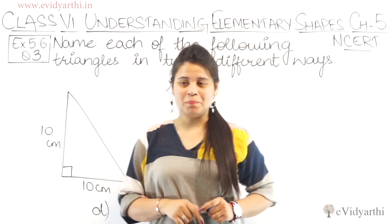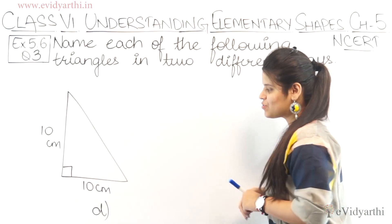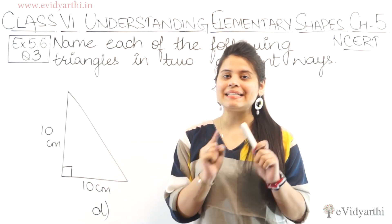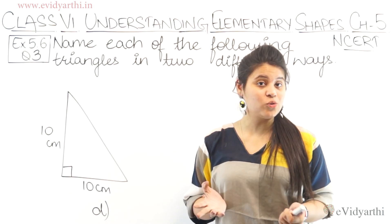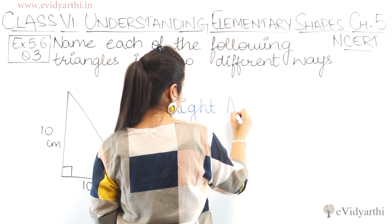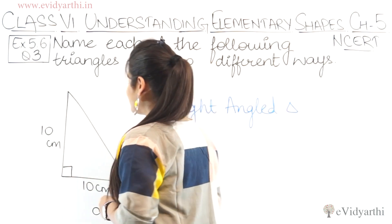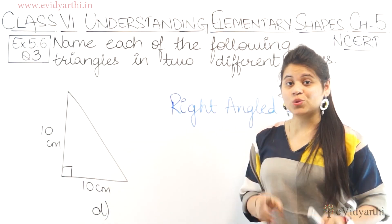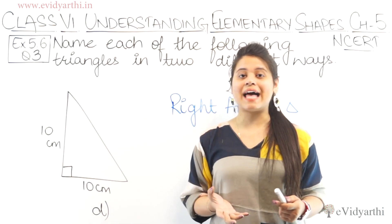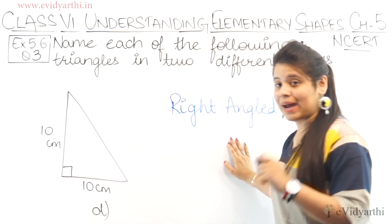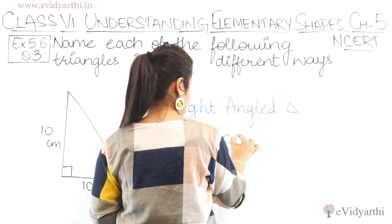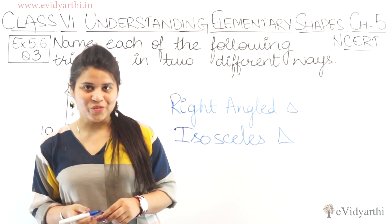Now coming to the D part. Looking at this triangle, one angle is 90 degrees, which means it has one right angle. So it will be a right angle triangle. Next, if we see the sides, two sides are given as 10cm each, so both sides are equal. If two sides are equal, it is an isosceles triangle. So this is both a right angle triangle and an isosceles triangle.